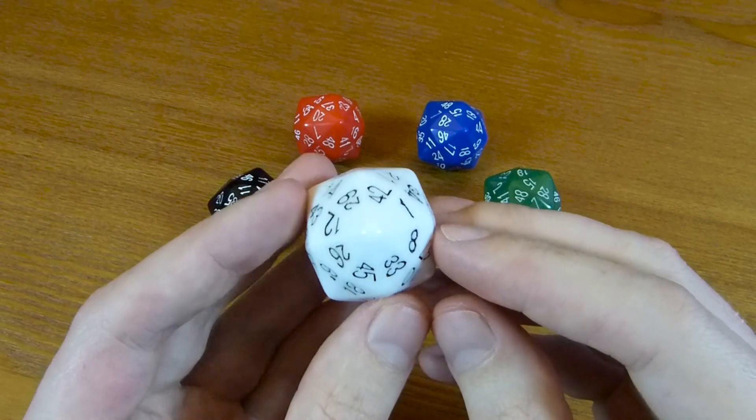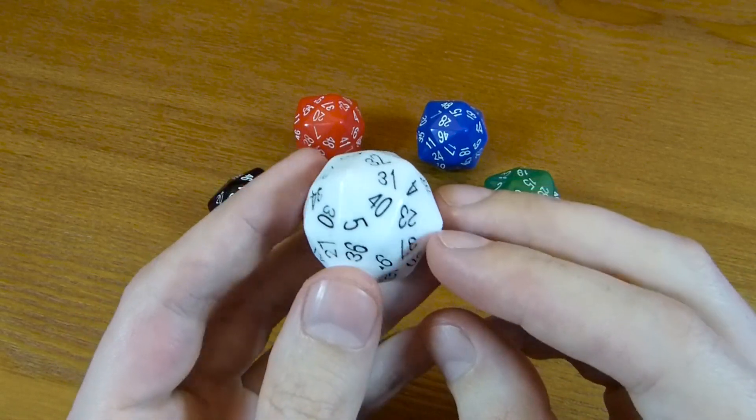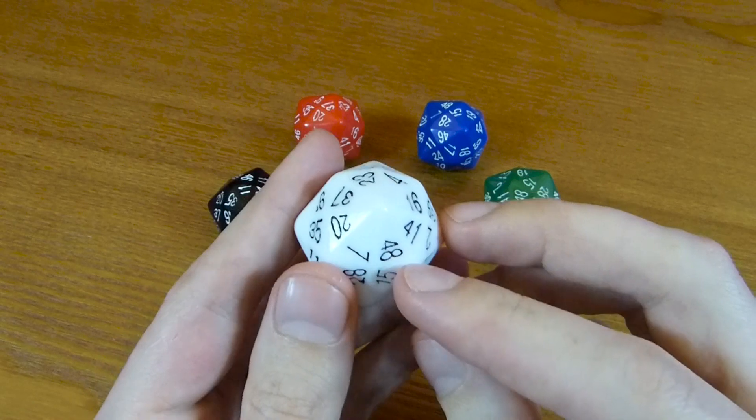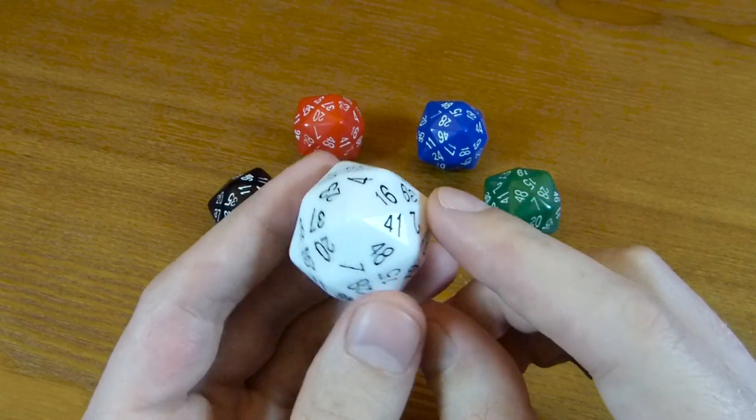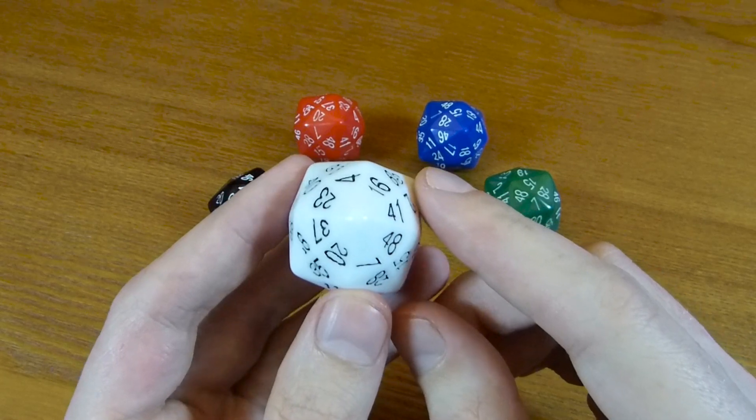In addition, the numbers are very evenly spread over the die. So the eight numbers around this vertex here add up to 8 times the average value on the die.